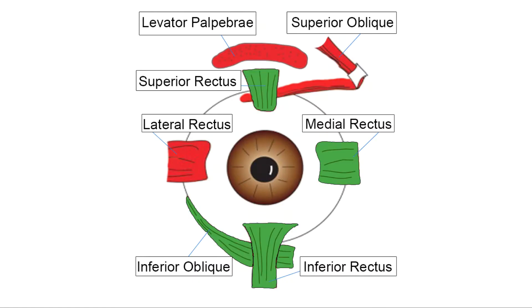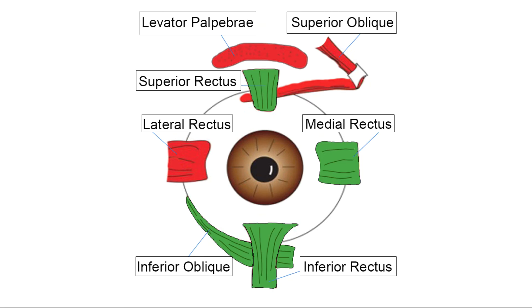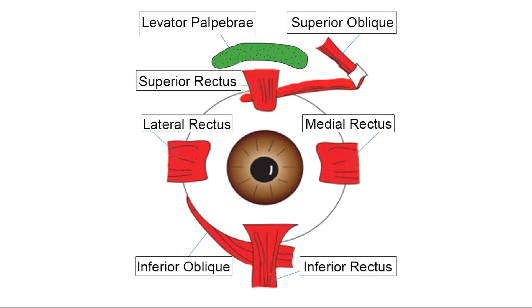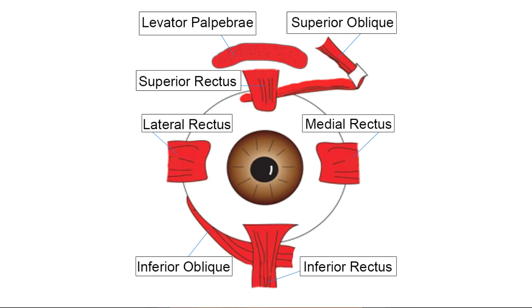In the orbit, it supplies four extraocular muscles, the levator palpebrae, the iris sphincter muscle, and the ciliary muscle.